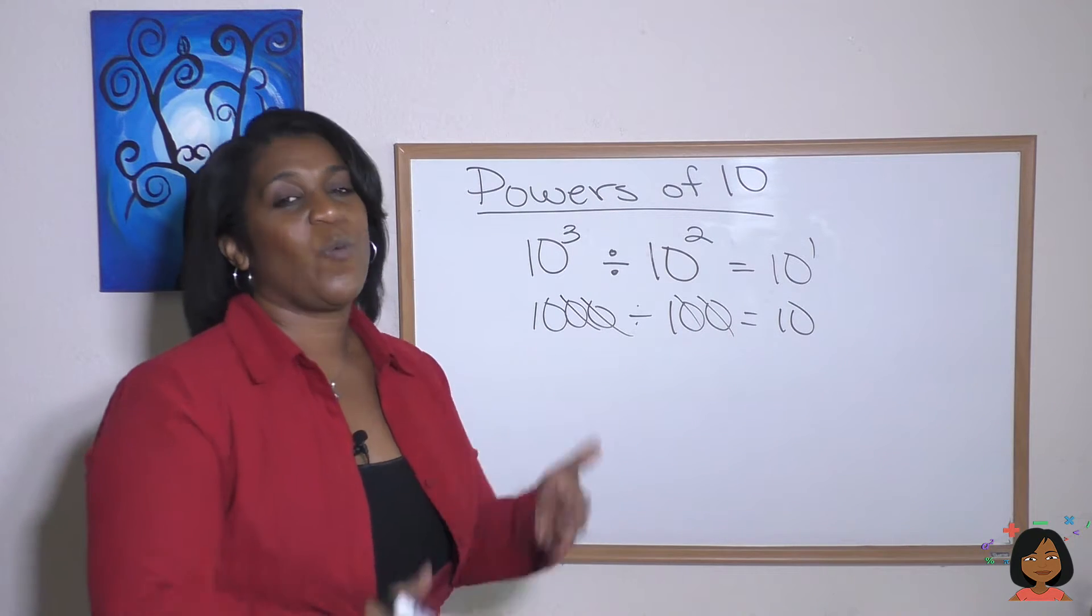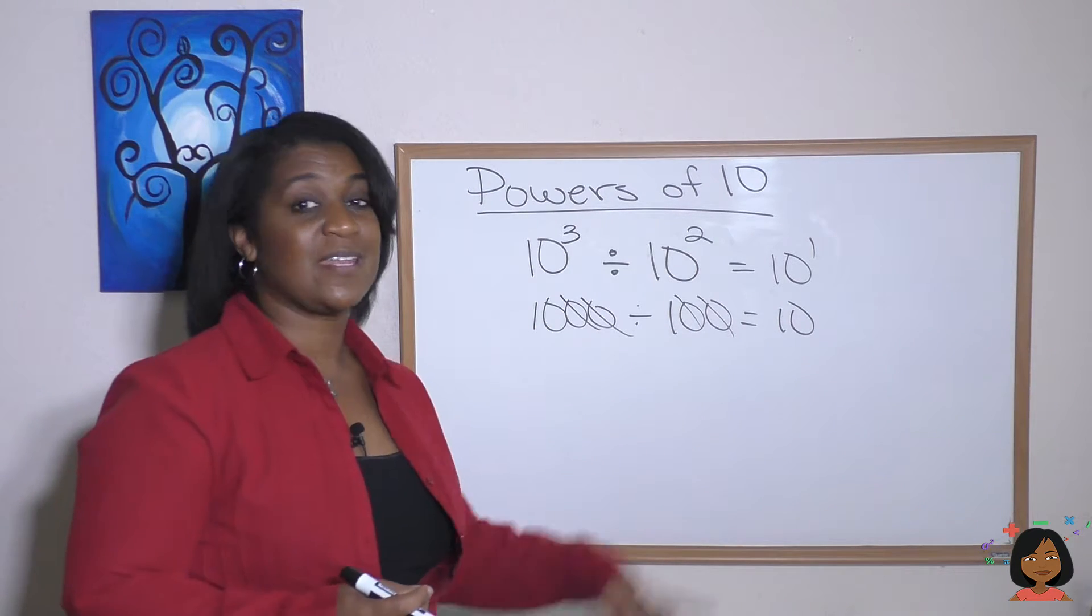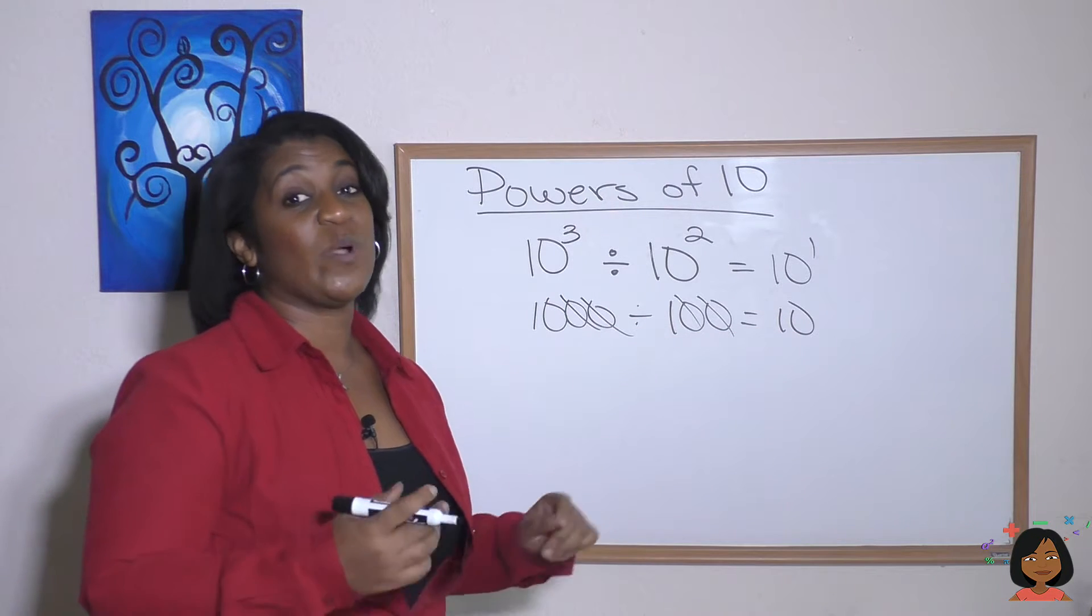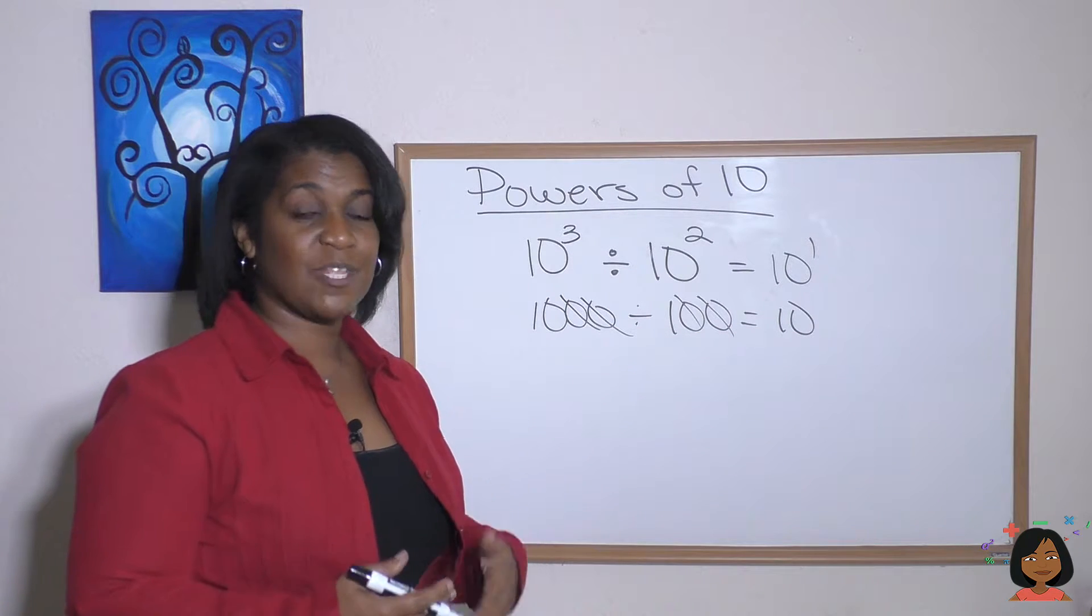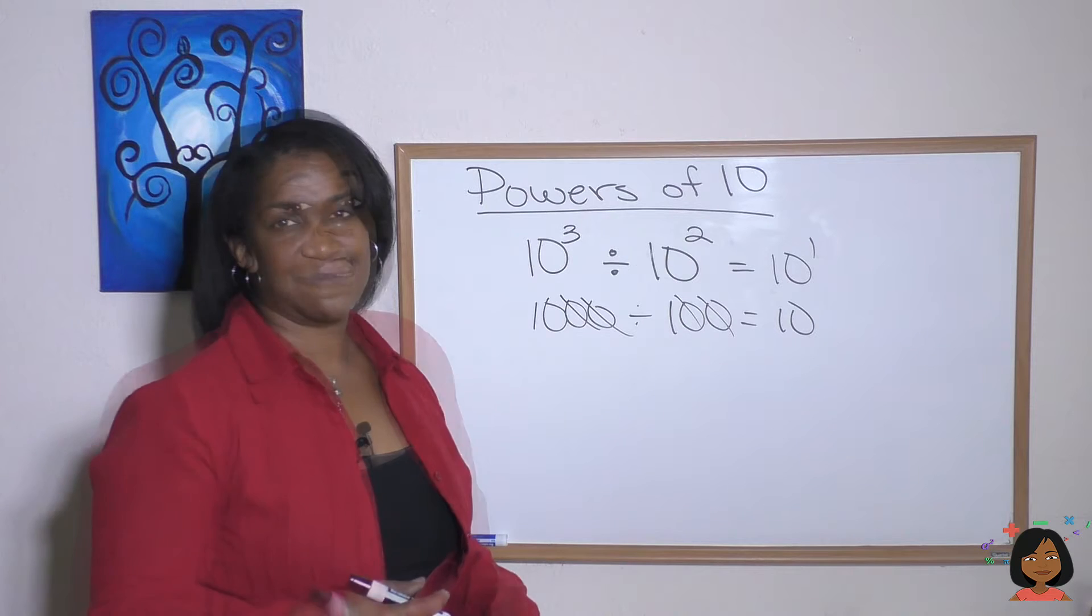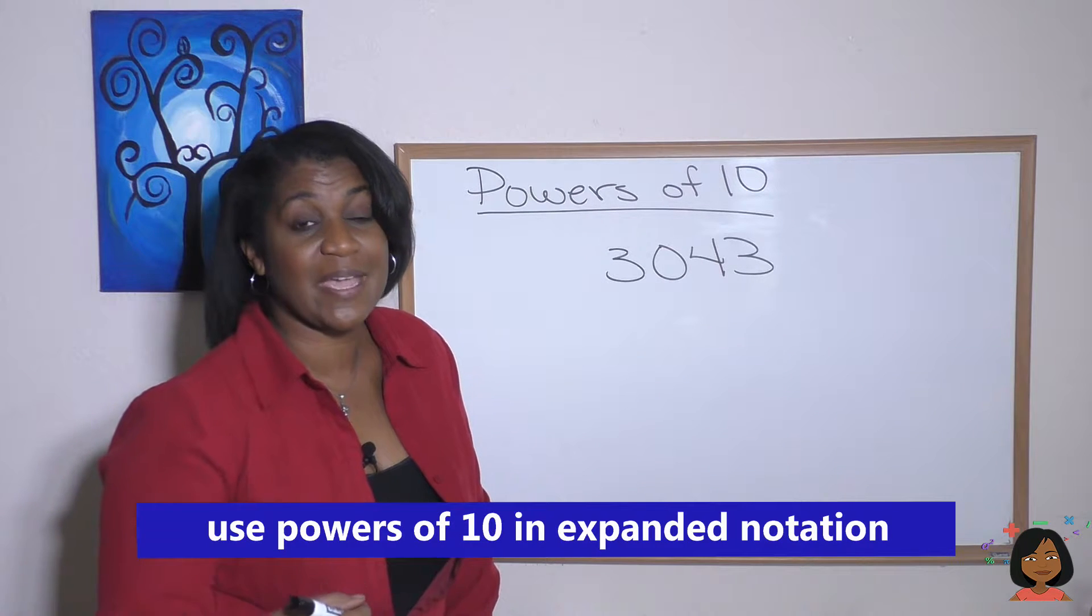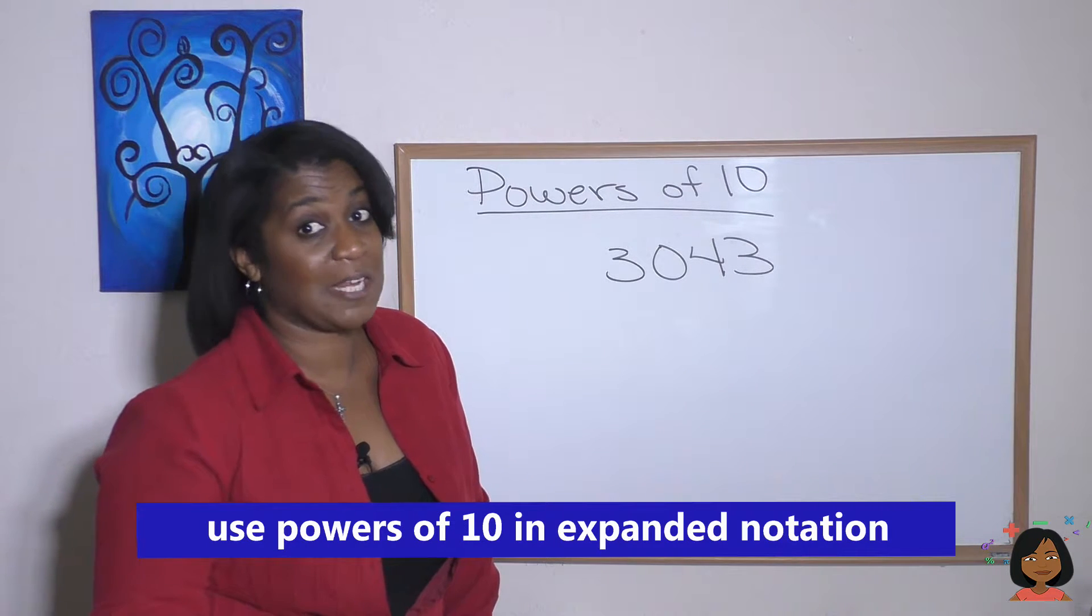So the rule, when multiplying powers of 10, add the exponents. When dividing powers of 10, subtract the exponents.